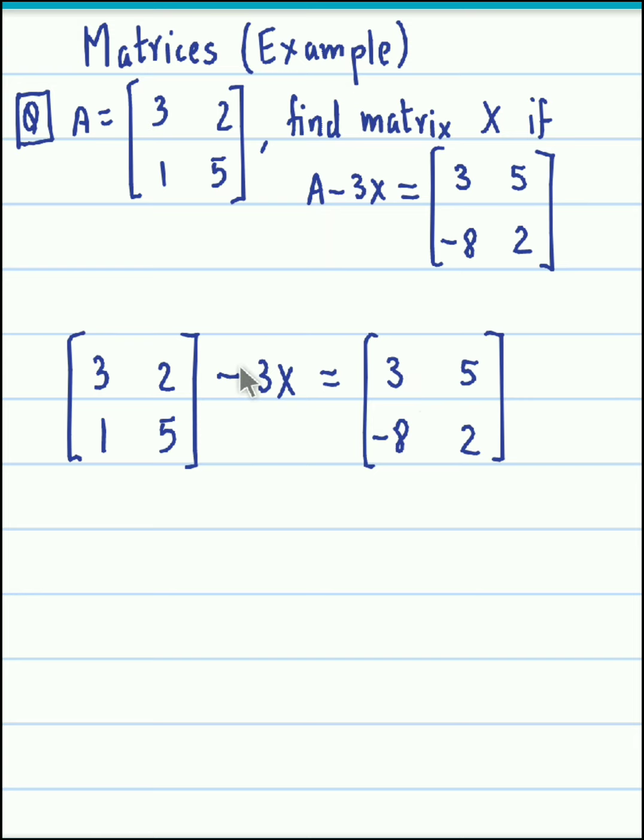Now we just rearrange the terms. We bring this matrix onto the left hand side and transfer negative 3X on the right hand side. So what we get here is, on the left hand side we get 3, 2, 1, 5.